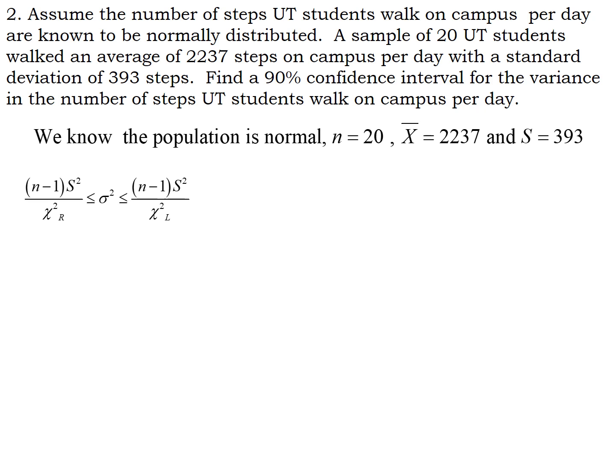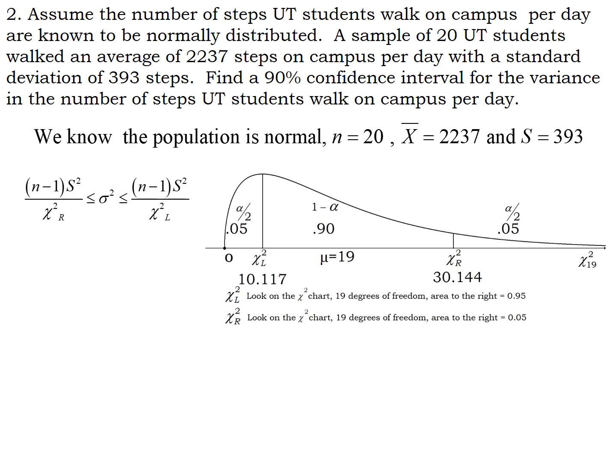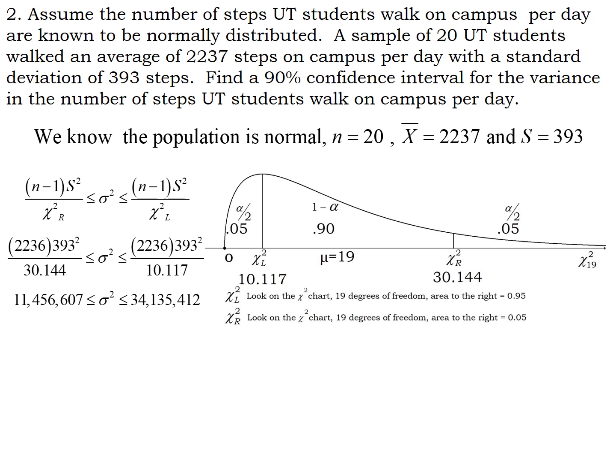We have to find our chi-squared scores. We want to be 90 percent confident, so the area in the middle is 0.90 and the area on each tail is 0.05. We look up 0.95 and 0.05 on the chi-squared chart because those are the areas to the right of our respective confidence interval limits. Then we plug in our numbers, and this time we leave sigma squared in the middle because we want a confidence interval for the variance — the number of steps.